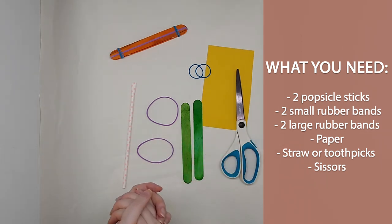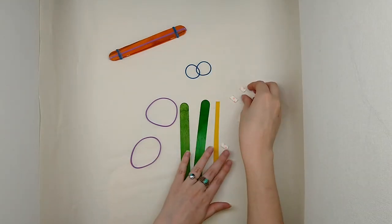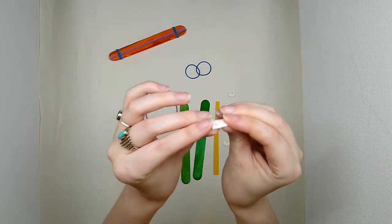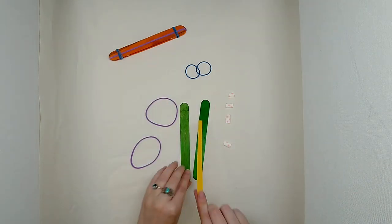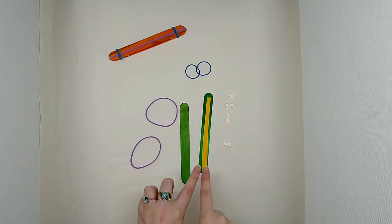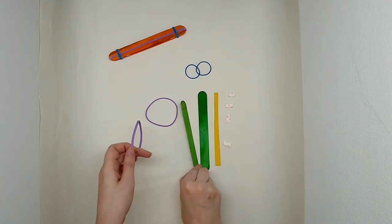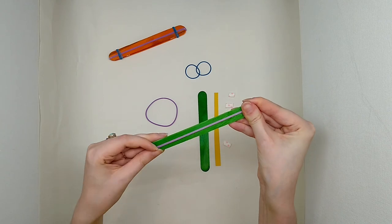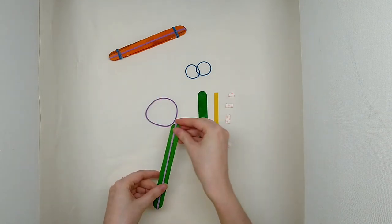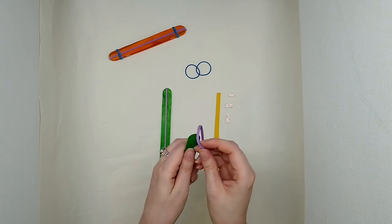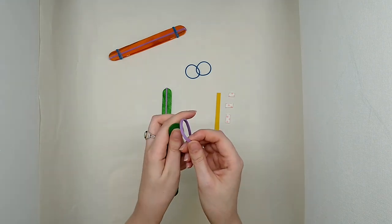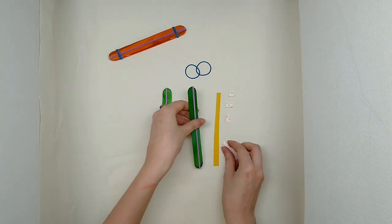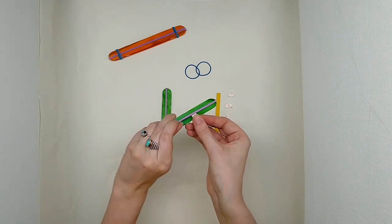Let's get started. To make our popsicle stick harmonica, I've cut four little pieces of my paper straw and I've cut my paper down to about the width and the length of my popsicle stick. Now I'm going to wrap this rubber band lengthwise around my popsicle stick for both of them.